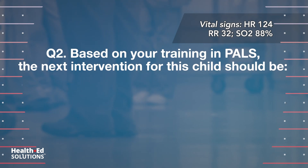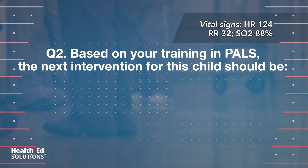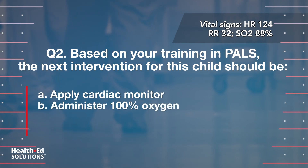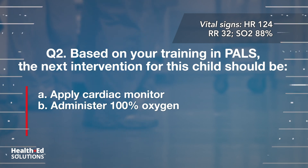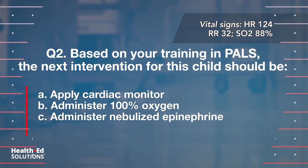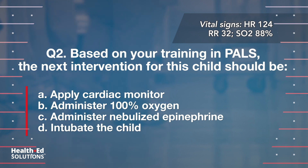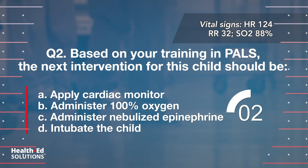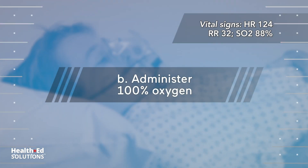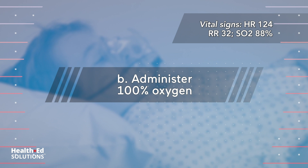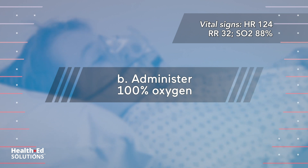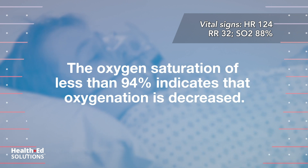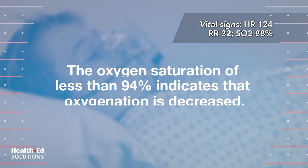Question 2: Based on your training and PALS, the next intervention for this child should be: A) apply cardiac monitor; B) administer 100% oxygen; C) administer nebulized epinephrine; D) intubate the child. Correct answer B — administer 100% oxygen. The oxygen saturation of less than 94% indicates that oxygenation is decreased.